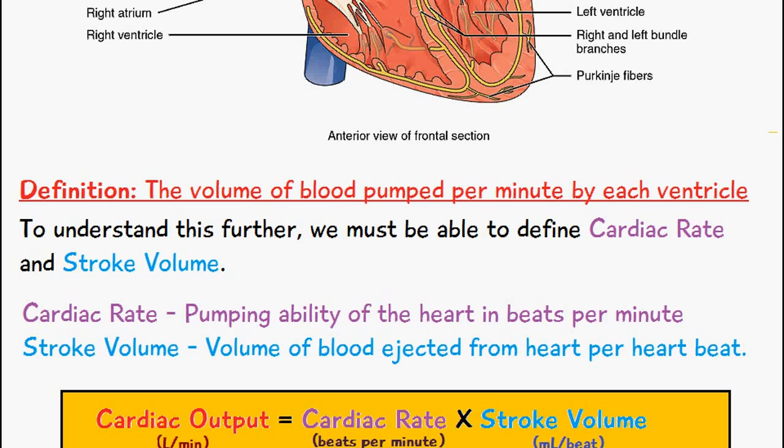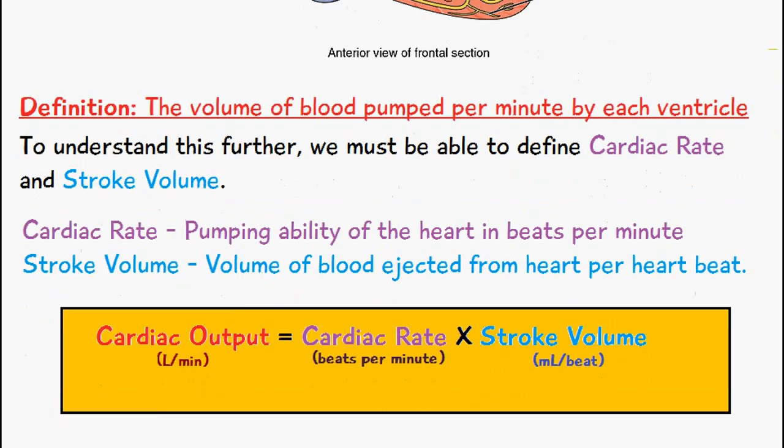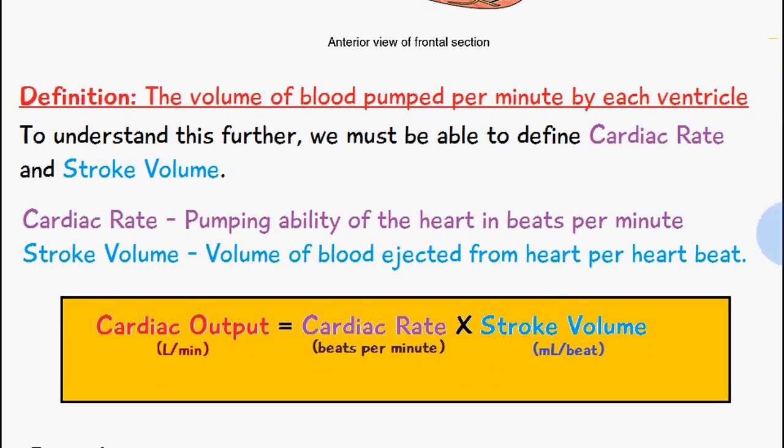Cardiac rate is the pumping ability of the heart in beats per minute, and stroke volume is the volume of blood which is ejected from the heart per heartbeat. There is an equation to work out cardiac output: cardiac output equals cardiac rate times stroke volume.